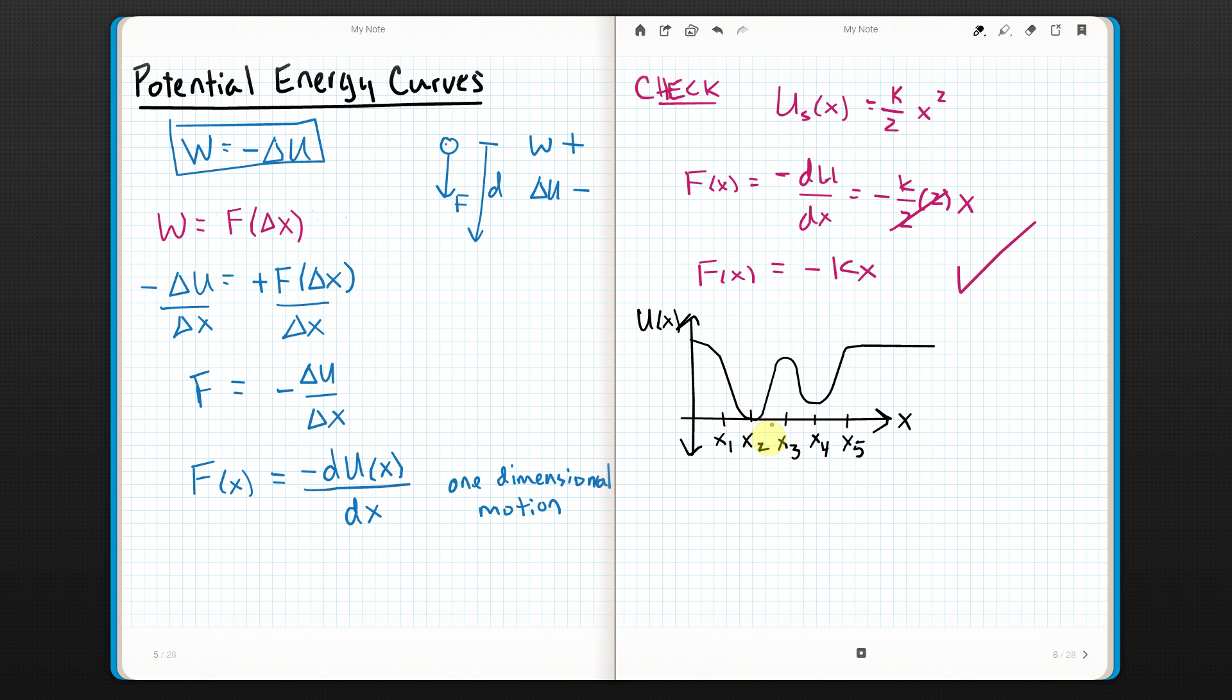Alright, so looking back at this equation over here, remember that a derivative gives you a slope. So, what I'm really saying is force is the negative slope of this graph. So, for example, in this section right here, the slope is negative, so the force would actually be positive between x1 and x2. I hope that makes sense. Similarly, right along here, from x2 to x3, I would have a, the slope is positive, so the force would actually be negative. Okay, and where the slope is zero, the force would be zero. So, the force is zero at x2 and x3 and x4.